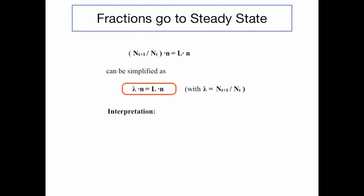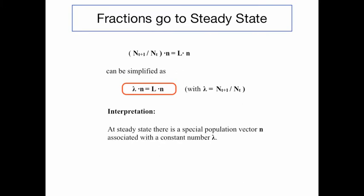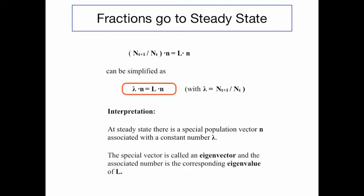This is a very important relationship. At steady state, for which this relation is derived, there is a special population vector n associated with a constant number lambda. You can see lambda on the left side, exactly where on the right side we have the Leslie matrix. As a definition, this special vector is called the eigenvector, and the associated number lambda is the corresponding eigenvalue of the Leslie matrix L.